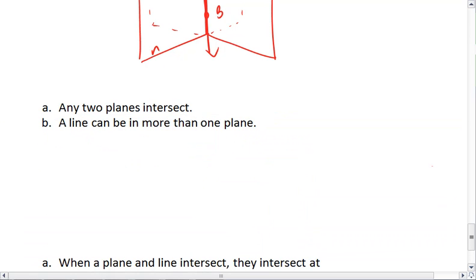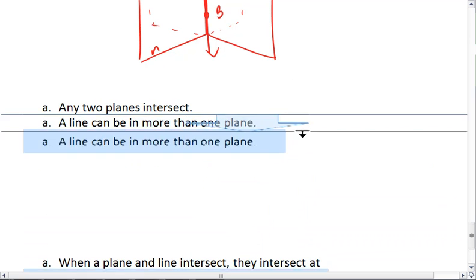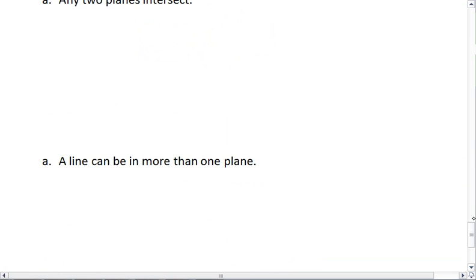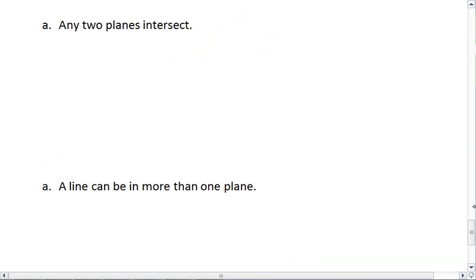The next one, any two planes intersect. This statement is false. Think about the room you're in. Your floor and the ceiling are two planes, but even when we extend them forever, they don't intersect. And those are what we would call parallel planes.